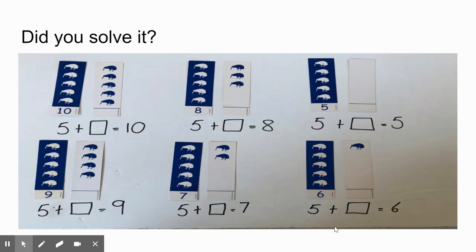Can you solve it? Can you see how I've flipped the cards now? You can see 5 kiwis on the blue card and 5 kiwis on the white card. So 5 and 5 gives me 10 kiwis.